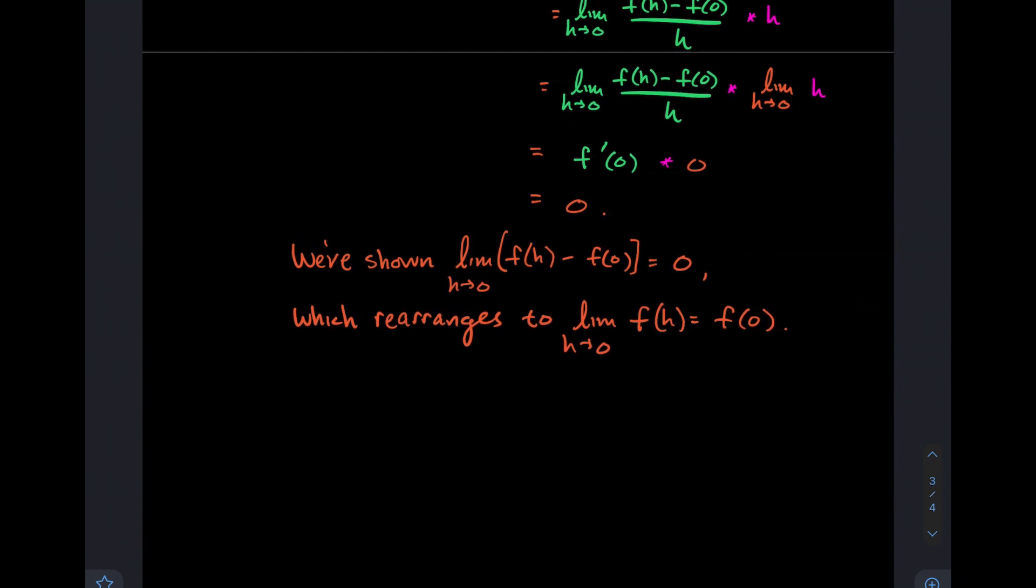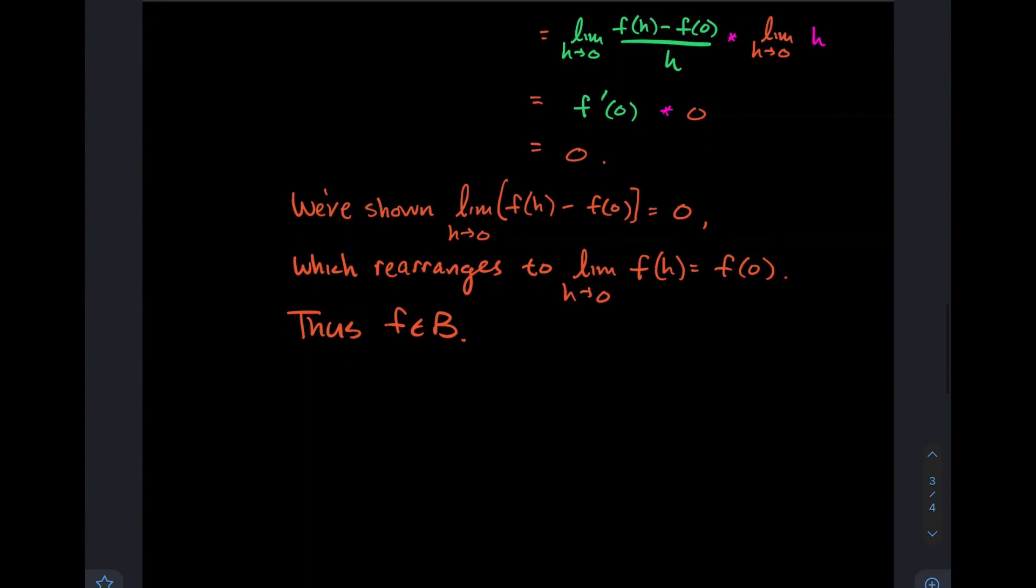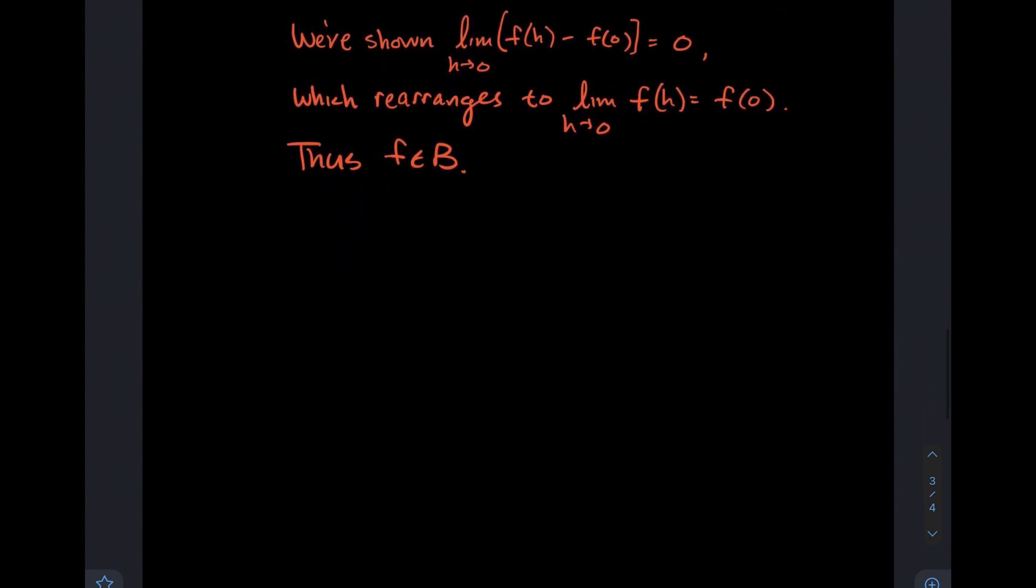Now what we can do is rearrange it so that f(0) is on the side by itself. And thus, we've established that idea that as h goes to 0, the output should get close to f(0). And so that concludes that f is in B. Remember, that means f is a continuous function. What we recovered then is that all differentiable functions at 0 are continuous at 0 as well.